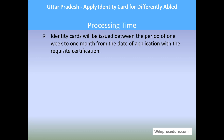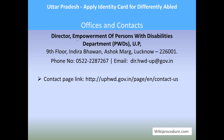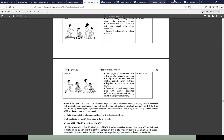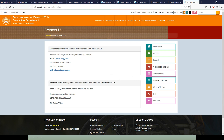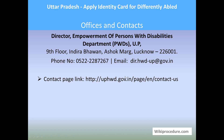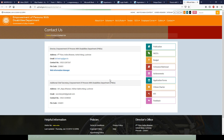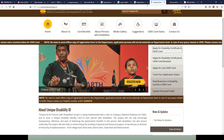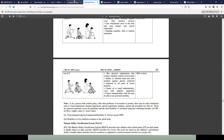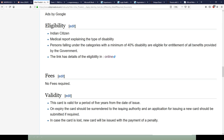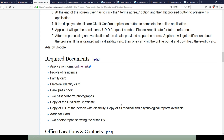Fees: no fees are required for this procedure. Processing time: ID cards will be issued within a period of one week to one month from the date of application with the requisite certification. Offices and contacts: Director, Empowerment of Persons with Disability Department (PWD), UP, Indira Bhavan, Lucknow — phone number and email ID are provided for users to communicate grievances. Links for contact information of the respective department and other online resources are also provided for convenient direct access.